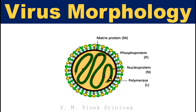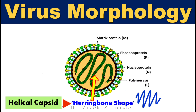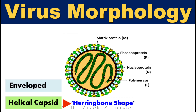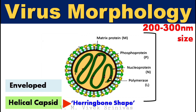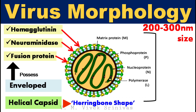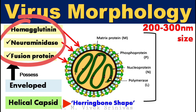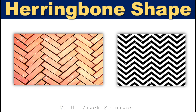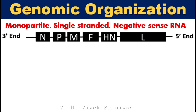Virus morphology. This virus possesses a helical capsid which is herringbone-shaped and is also covered with a lipid envelope all around. The entire virus is about 200 to 300 nanometers in diameter. This lipid envelope is studded with three important proteins: hemagglutinin, neuraminidase, and fusion protein. These three proteins are the immunodominant proteins which play a major role in antigenicity, that is, virus-neutralizing antigens. This is the herringbone pattern observed in the helical capsid of this virus.